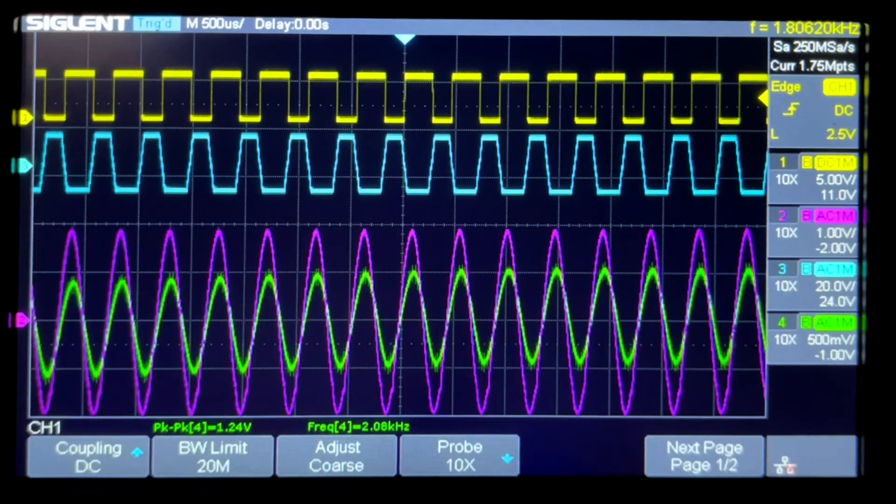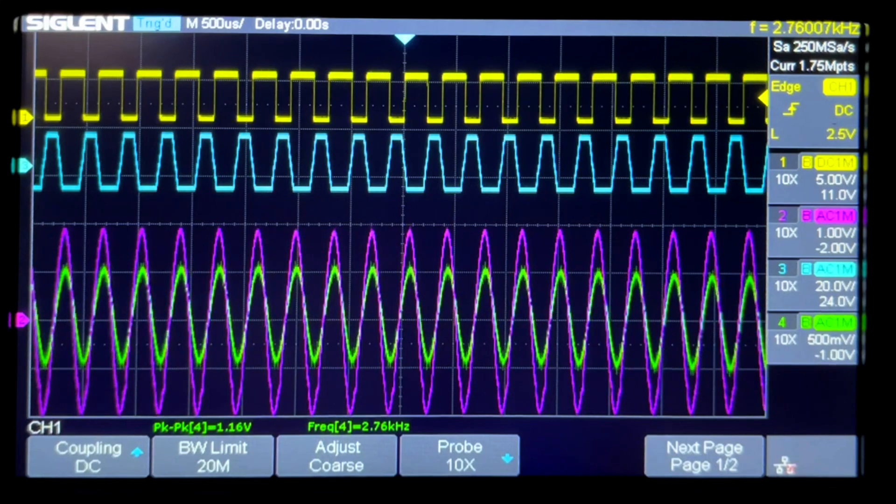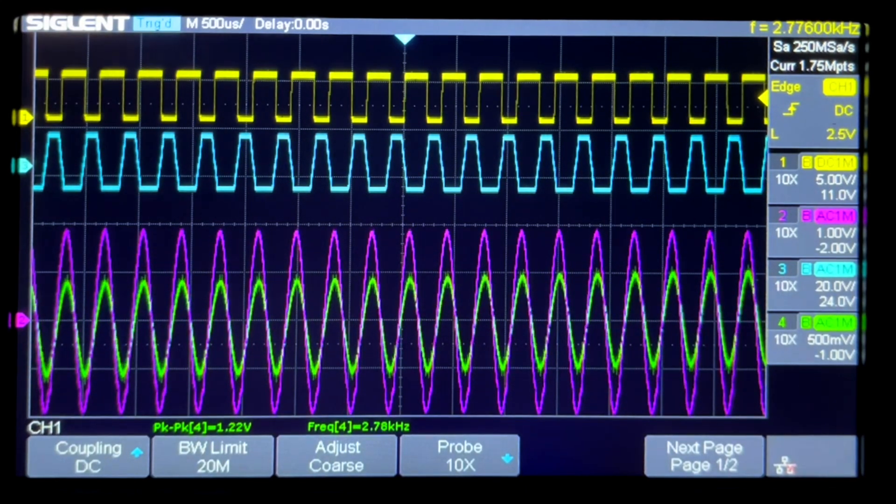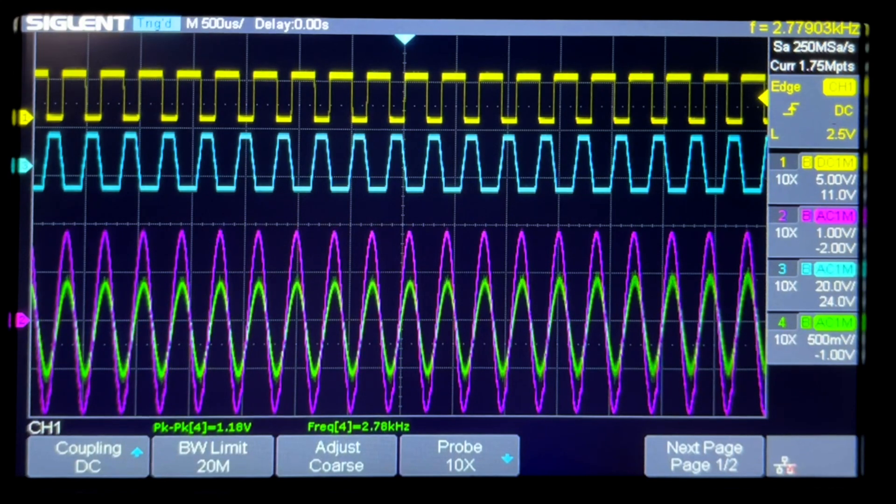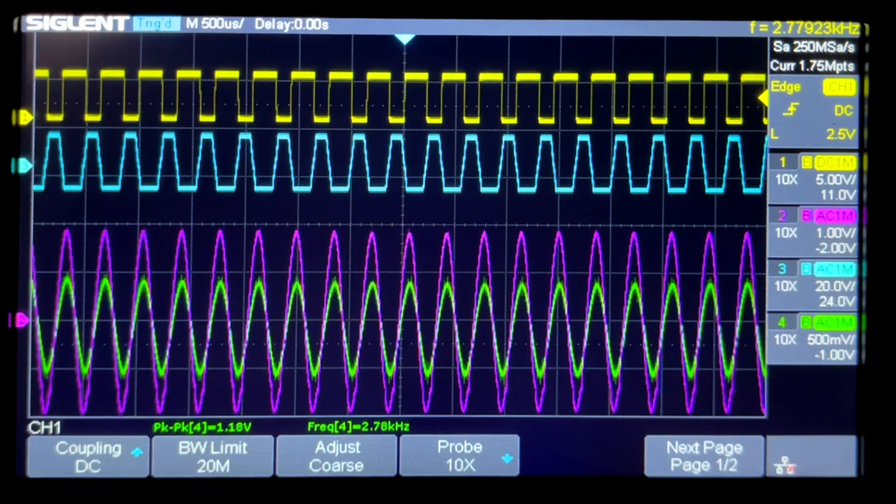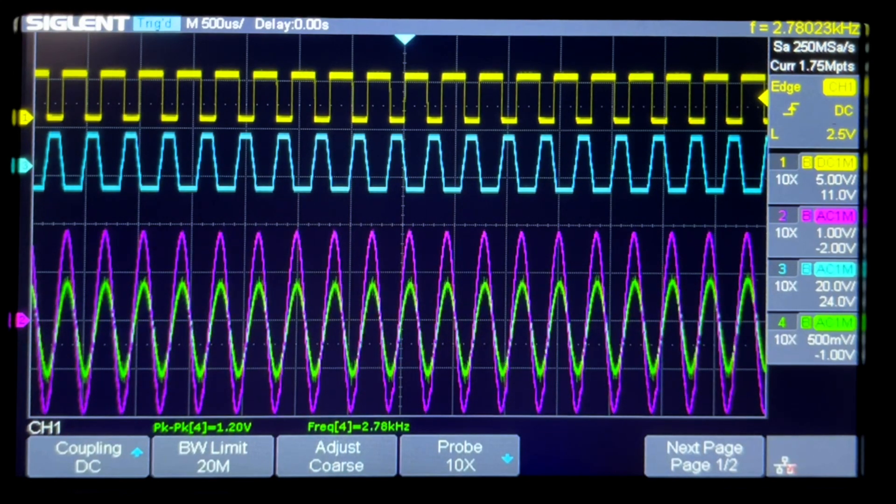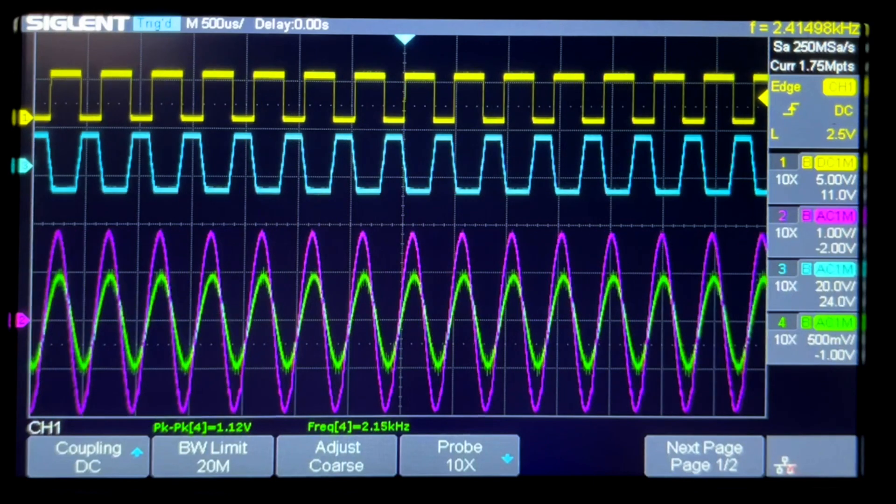Next we're going to see a spin down test where we remove the feedback signal and let the motor go up to full speed and then let it drift down back to sync speed. You'll note that the interference is not so bad when the motor is not powered.